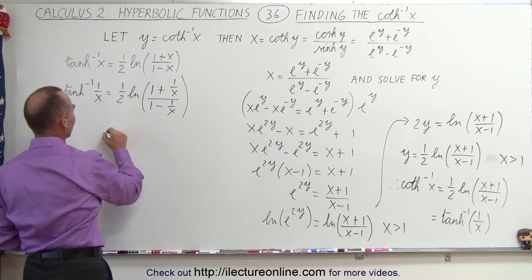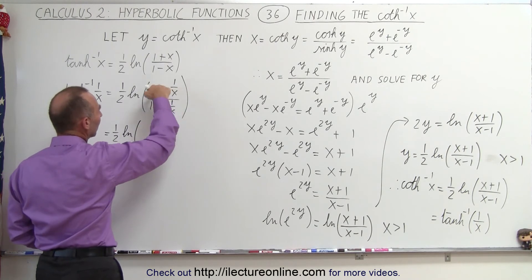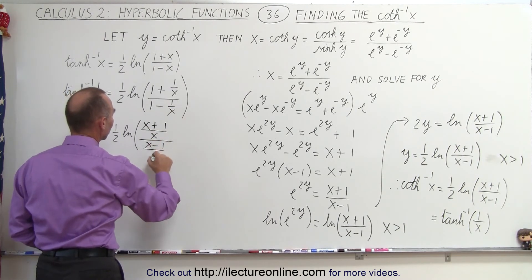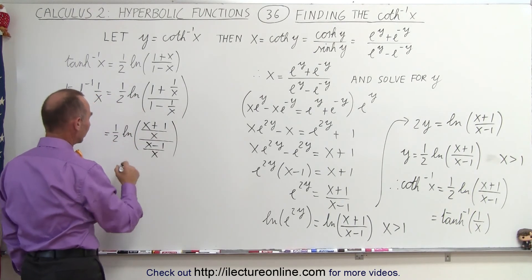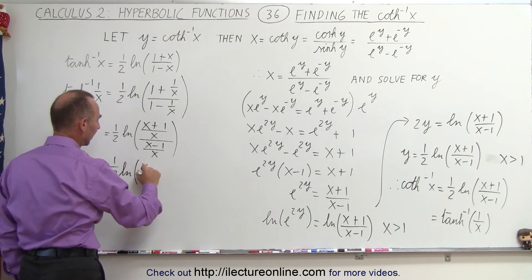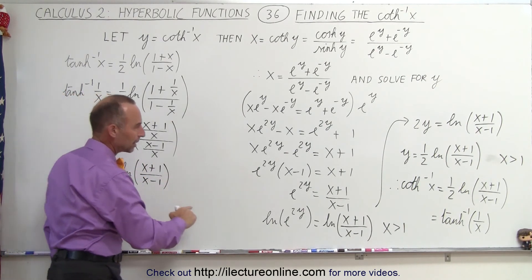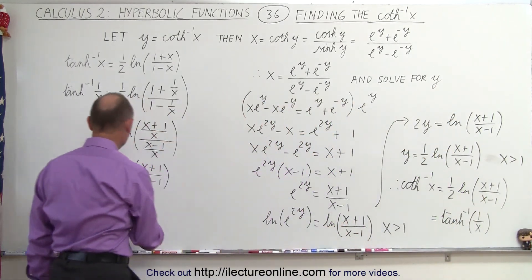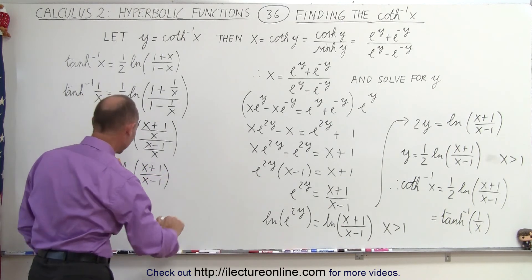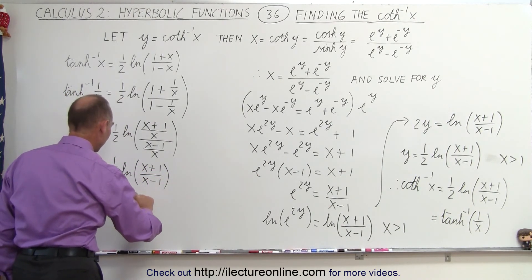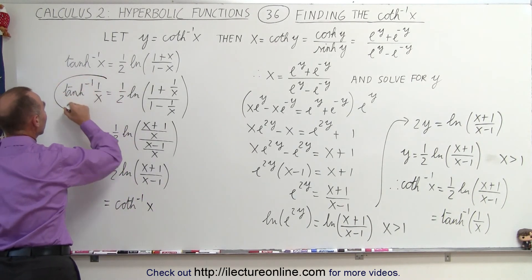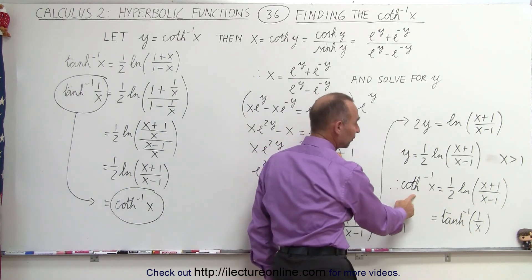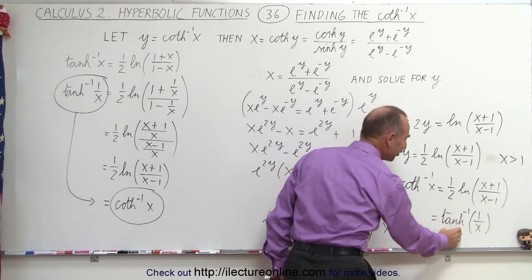Let's see if that is indeed the case. So this is 1 half times the natural log of — put it out over the same denominator — this becomes x plus 1 over x divided by x minus 1 over x. Of course, the x's cancel out, which leaves us with 1 half times the natural log of x plus 1 over x minus 1. And coming up here, we see that this is indeed exactly the same — the natural log of x plus 1 over x minus 1. So you can see that's exactly the same. So this is equal to, therefore, the inverse hyperbolic cotangent of x.